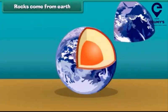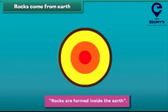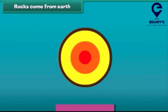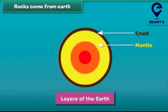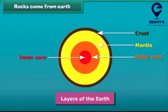All rocks come from earth, and all the three layers of earth are made up of rocks. So we can say that rocks are formed inside the earth. The outermost layer of the earth is called the crust, which is formed by solid rocks and soil. The middle and innermost layers are known as the mantle and the core respectively. The mantle and outer core are very hot due to high temperature, so rocks are found beneath in melted form. In the inner core, rocks are solid due to high pressure.